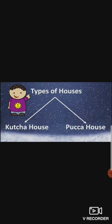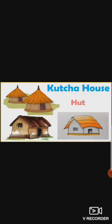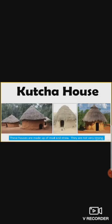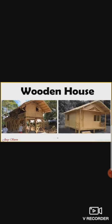There are basically two types of houses: kaccha house and pakka house. Kaccha house is also called a hut. As you can see in the picture, these houses are mostly made up of mud, straw, and dry leaves. They are not very strong. They are also made up of wood — called wooden houses — and bamboo is also used to make such houses.